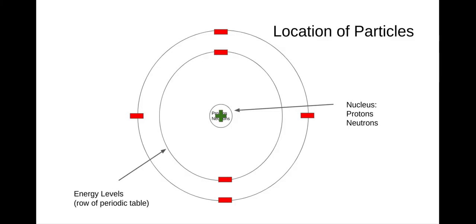Then we have these energy levels — they're the rings around the nucleus, and those go with the rows of the periodic table. We'll go through some examples of that in a bit. And then we have our negative electrons, which surround the nucleus on those energy levels.